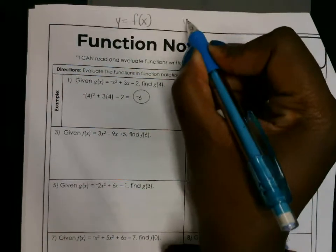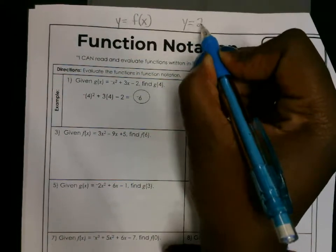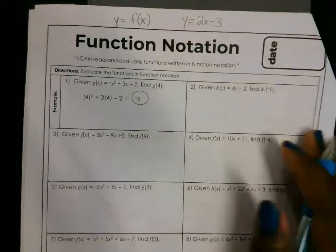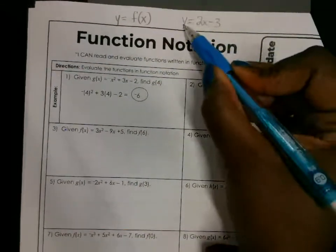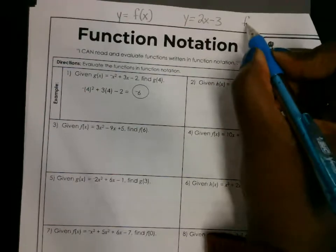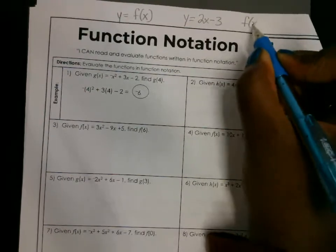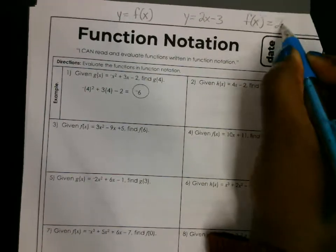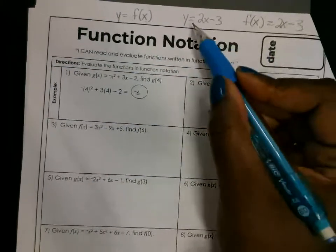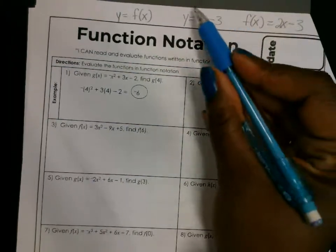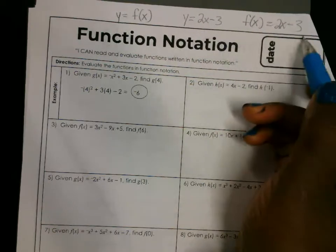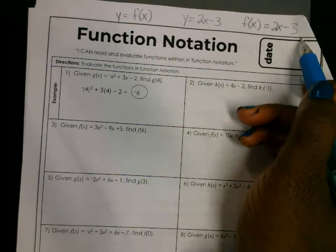An example of writing an equation in function notation: take 2x minus 3 and replace the y with f of x. So you have f of x is equal to 2x minus 3. And you've gone from writing a regular equation to writing that same equation in function notation.